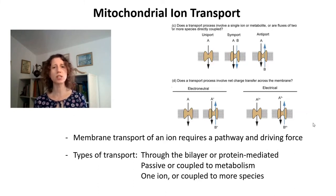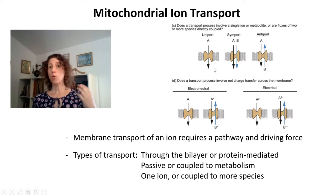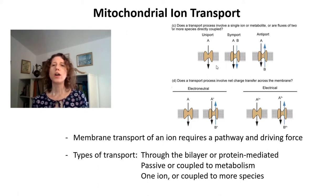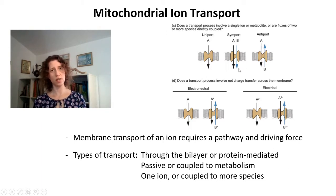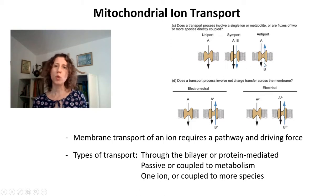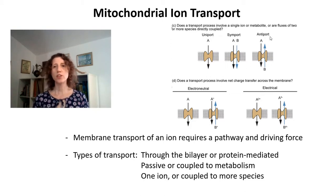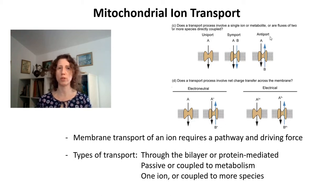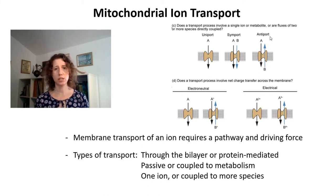Transport can happen as a uniport, where one specific species is transported. It can happen as a symport, in which two species are transported in the same direction. Or it can happen as an antiport, in which one species is exchanged for another — the transport of A is coupled to the transport of B, so you have uptake of A in exchange for release of B.